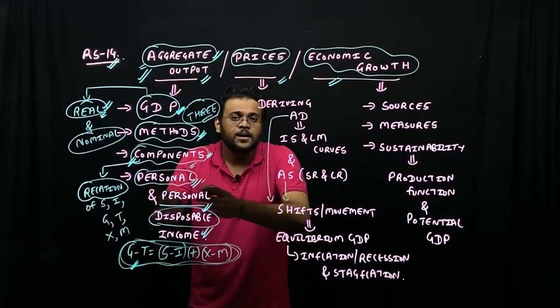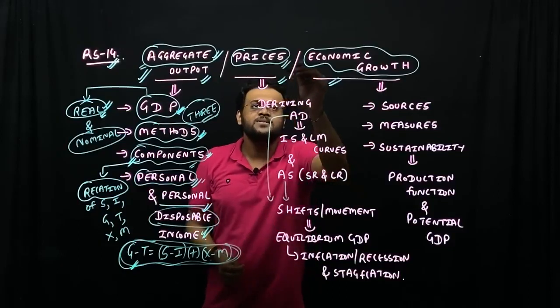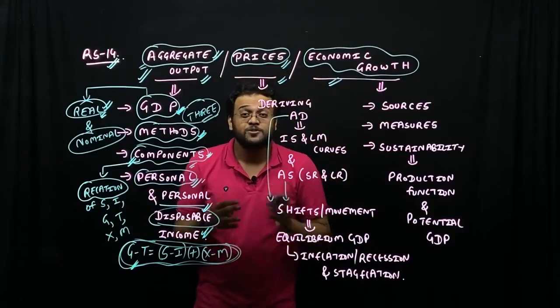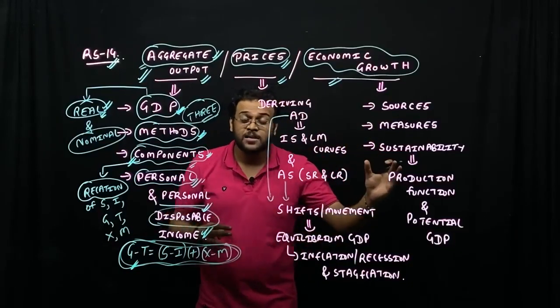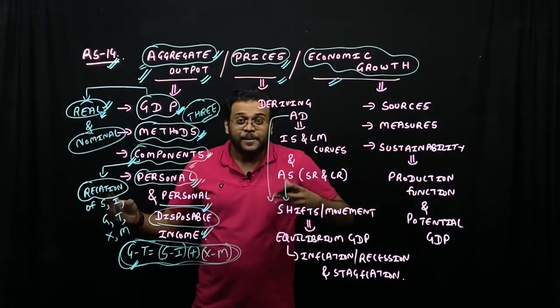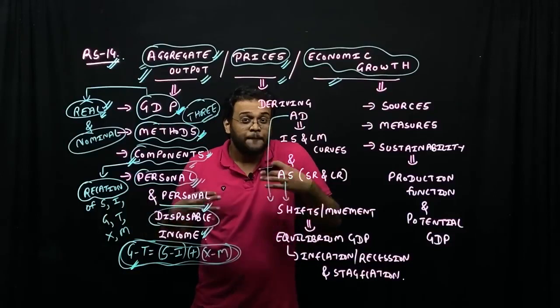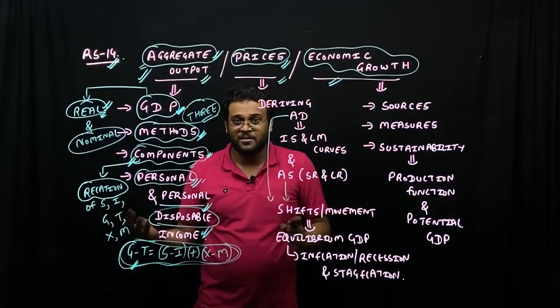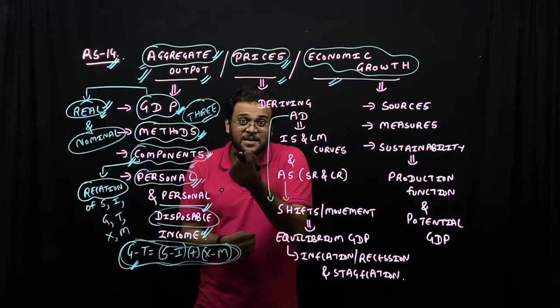After the second portion, we need to understand the prices. We need to understand the aggregate demand and the aggregate supply. Now, let's see the language and words. First of all, when we read microeconomics, we read the market demand, market supply, and at the intersection the product price.